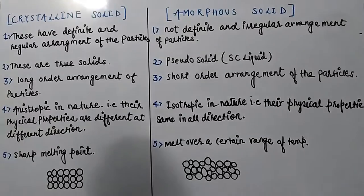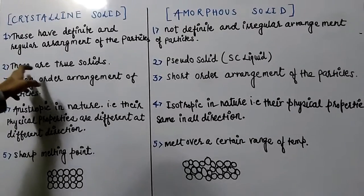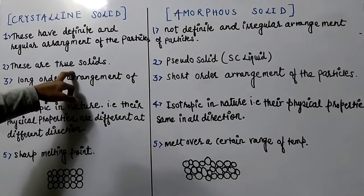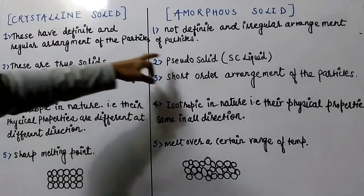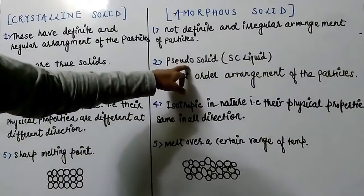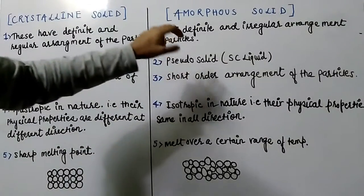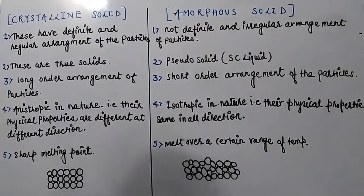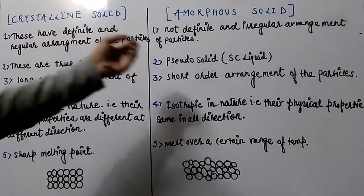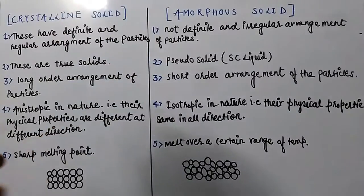Crystalline solids are true solids. Amorphous solids are pseudo solids. Pseudo solids means false solids.